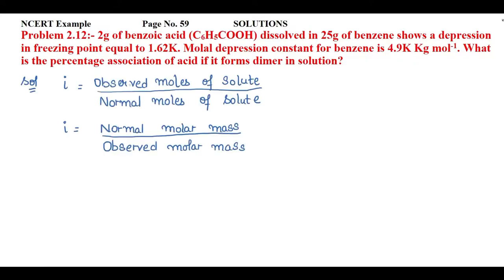For this reason, we will use the main formulae. First, to find percentage association, i equals observed moles of solute divided by normal moles of solute. We will also use i equals normal molar mass divided by observed molar mass to find the van't Hoff factor.